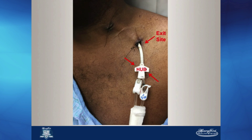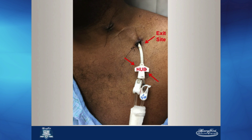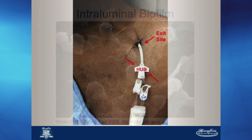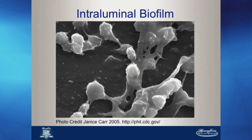Colonization of dialysis catheters via skin flora occurs almost universally. Migration of bacteria from the catheter hub to the exit site and ultimate endoluminal location leads to the production of biofilm, which acts as a reservoir for virulent bacteria.